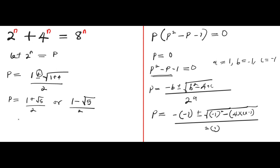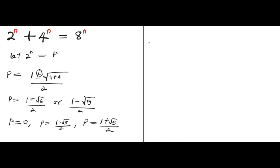So the three values for p are: p equals 0, p equals 1 minus root 5 divided by 2, and p equals 1 plus root 5 divided by 2. Let's consider each value. If p equals 0, recalling that 2 to the power of n equals p, we would have 2 to the power of n equals 0. But 2 to the power of n is always greater than 0, so p cannot equal 0 — this value is rejected.